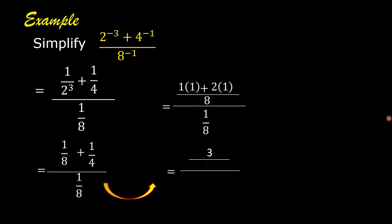So we have 3 over 8 divided by 1 over 8. We are going to multiply 3 over 8 by the reciprocal of 1 over 8.